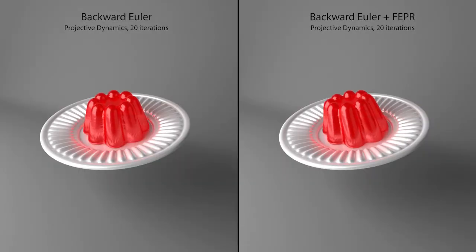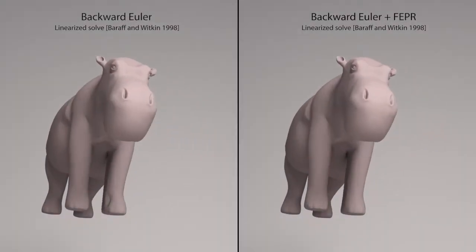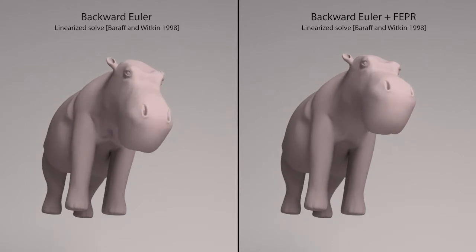Fast energy projection corrects the artificial damping of backward Euler, producing pleasantly jiggly jello. It also corrects the explosion behavior of a linearized backward Euler solve.